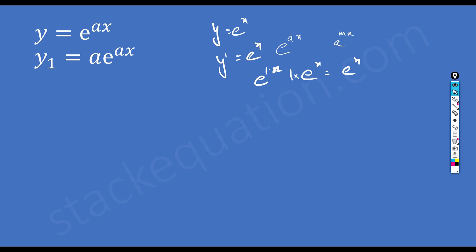Similarly, if I differentiate further, y2 is the differentiation of y1. Since a is a constant it stays, and we just deal with e to the power ax. Differentiating e to the power ax gives us a into e to the power ax, which combines with the a from the first derivative, so y2 equals a squared into e to the power ax.